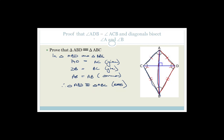What does that help us with? They wanted us to prove angle ADB equals angle ACB. Since these two triangles are congruent, angle ABD must equal angle ABC — the diagonal bisects angle B. And since the corresponding angles are equal, AB bisects angle A as well.